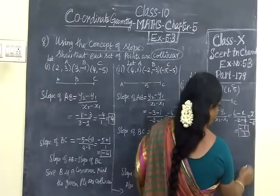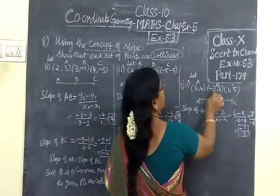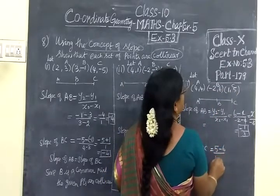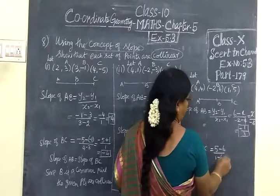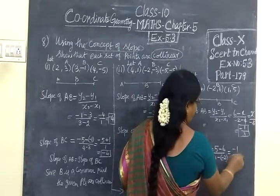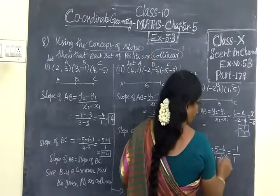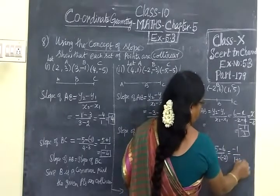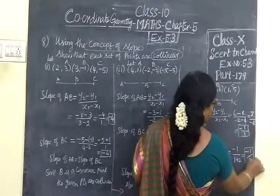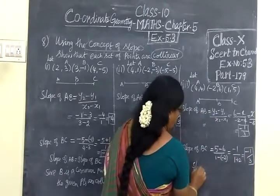The same answer should come here. So take BC: 5 minus 6 by 1 minus minus 2. 5 minus 6 is minus 1 by 1 plus 2. So minus 1 by 3.